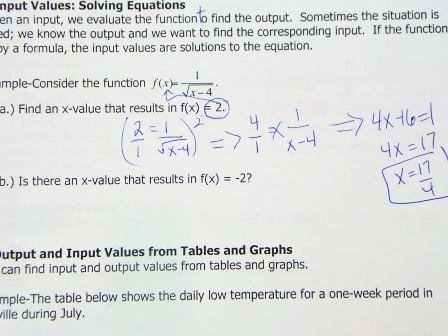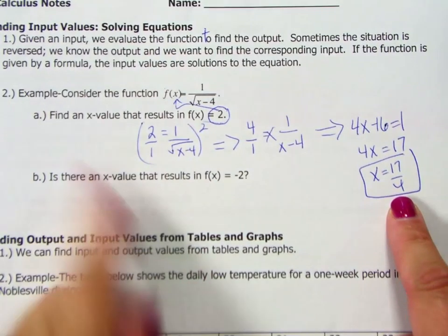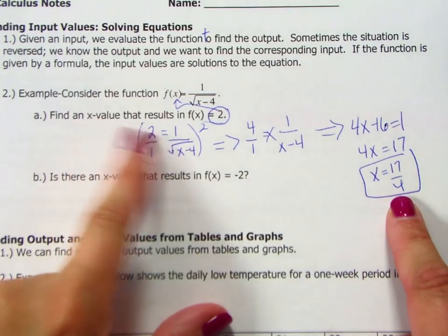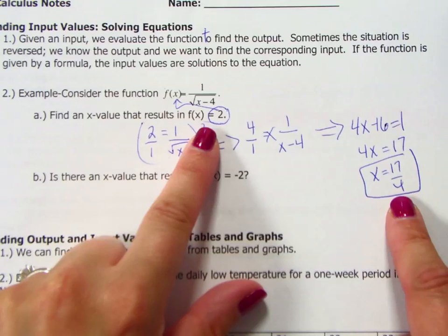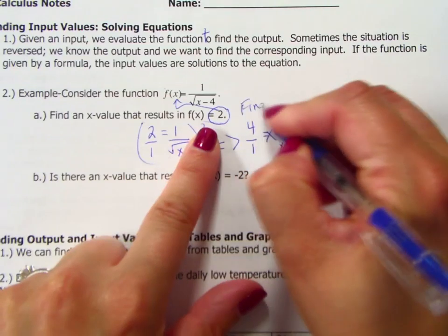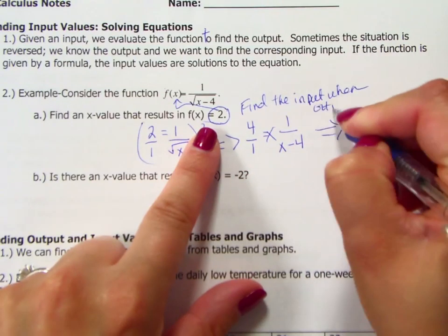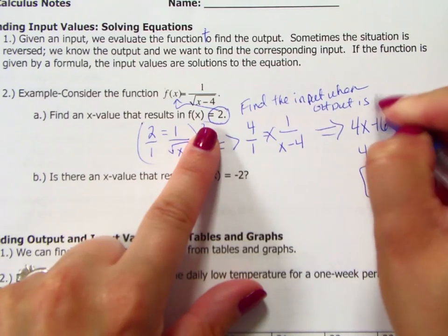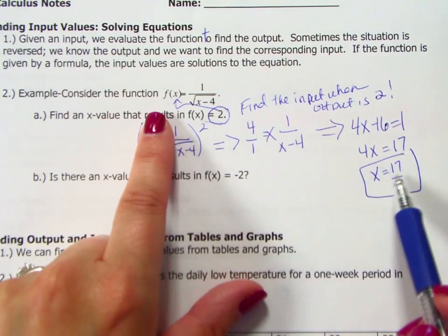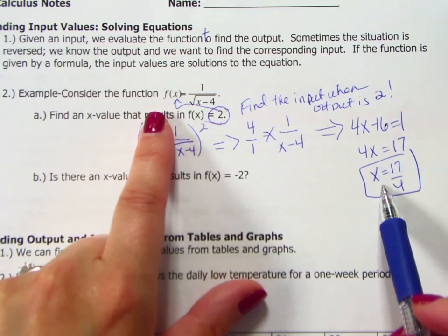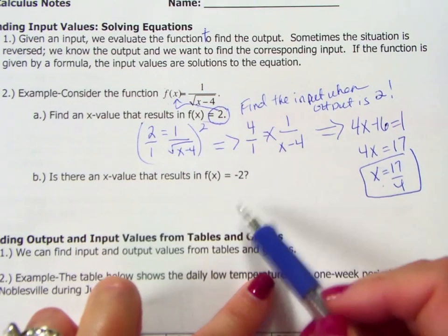I really want you to understand what we just did and what we just found. It says find an x value that results in f(x) equals 2. So what this is asking us to do is find the input when the output is 2. So I plug 2 in for the output, solved to find the input. So what should happen is if you plug that in for x, you should end up with 2.